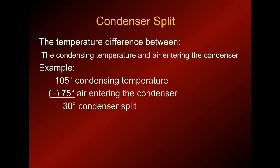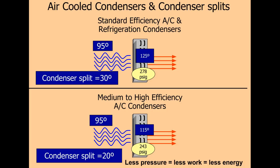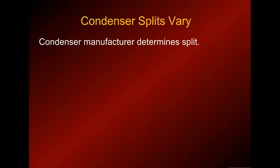So these are things to keep in your hip pocket as a reference point. For an air-cooled condenser, standard efficiency air conditioning — what we're used to working on — is about 30 degrees split. So if you have 95 degree ambient and 125 degree condensing temperature, you have a 30 degree split. Medium to high efficiency air conditioning condensers are down into the 20 degree split.